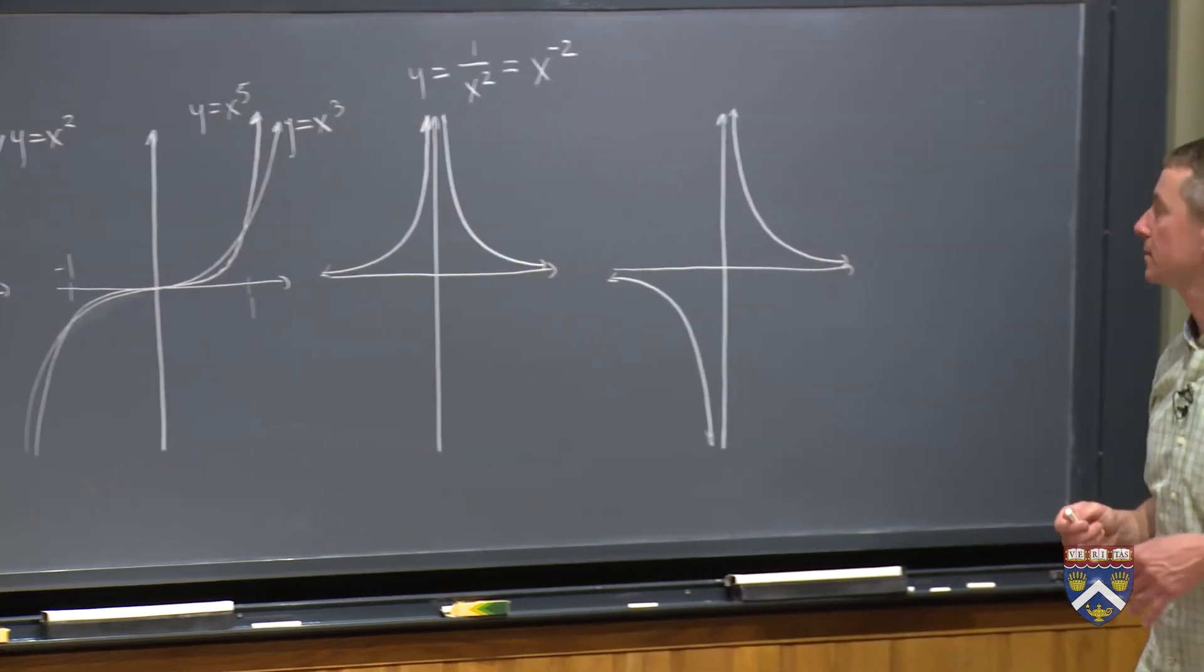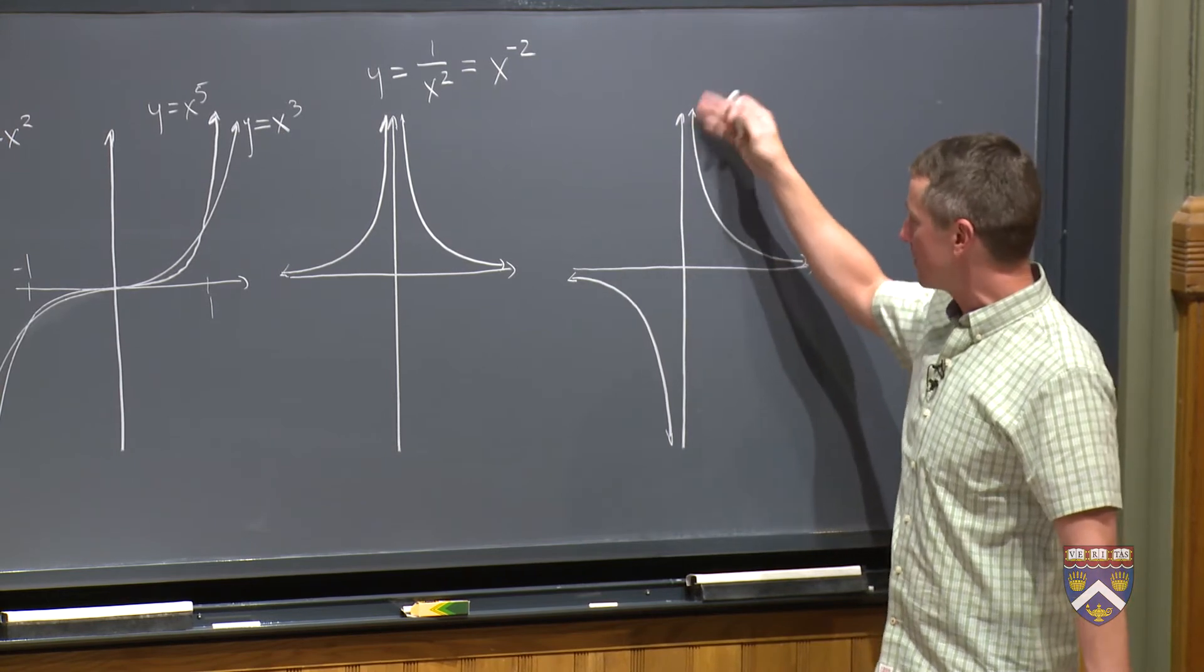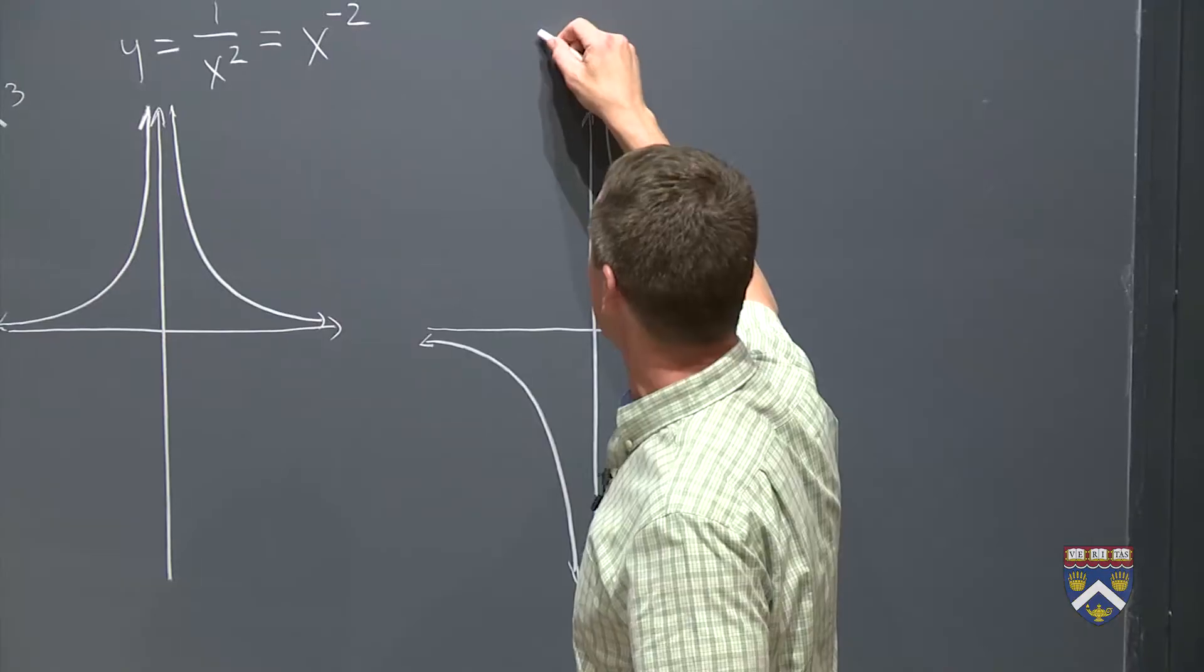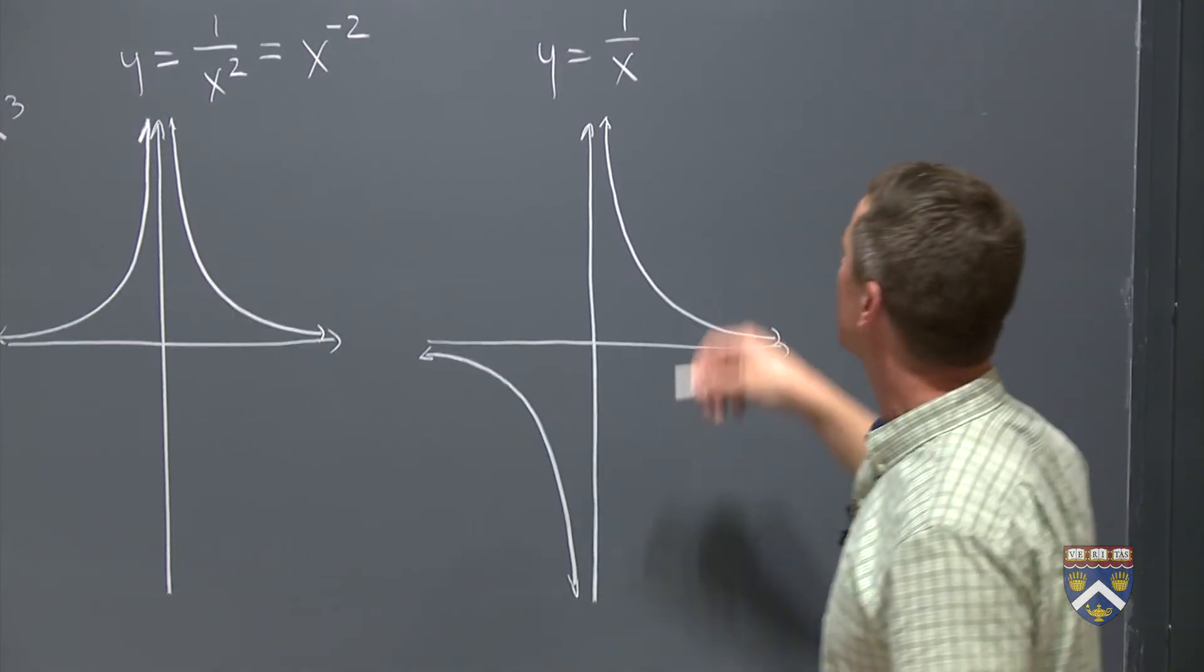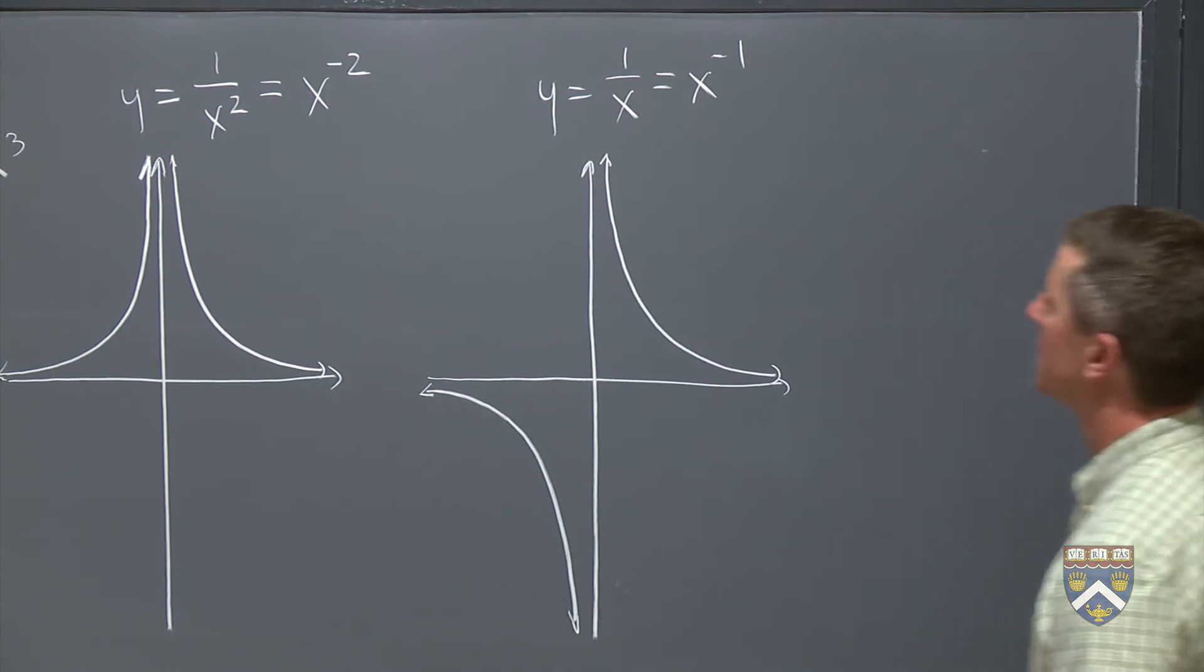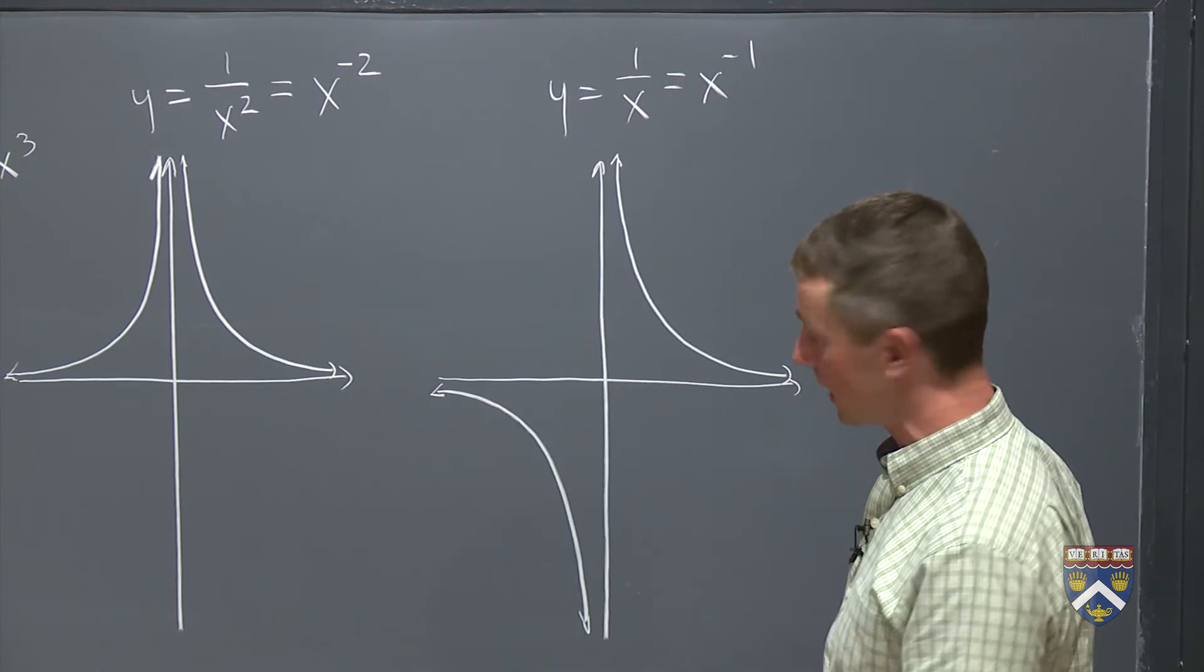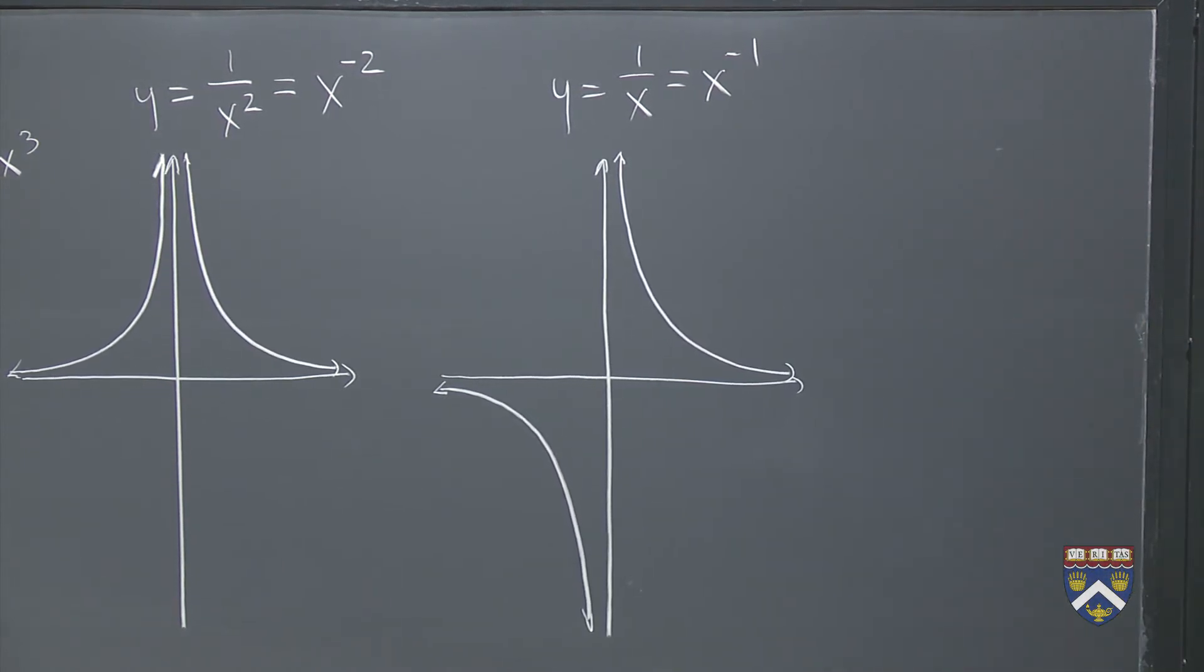Then there's this one, which qualitatively looks quite similar over here, but over here we now have negative y values. The reason for that is now we're not squaring anything, so this could be one over x, or one over x cubed, one over x to the fifth, which we can write as x to the negative one. So this also has a vertical asymptote at x equals zero, although we're going up to positive infinity on one side and down to negative infinity on the other side. And it still has a horizontal asymptote at y equals zero.